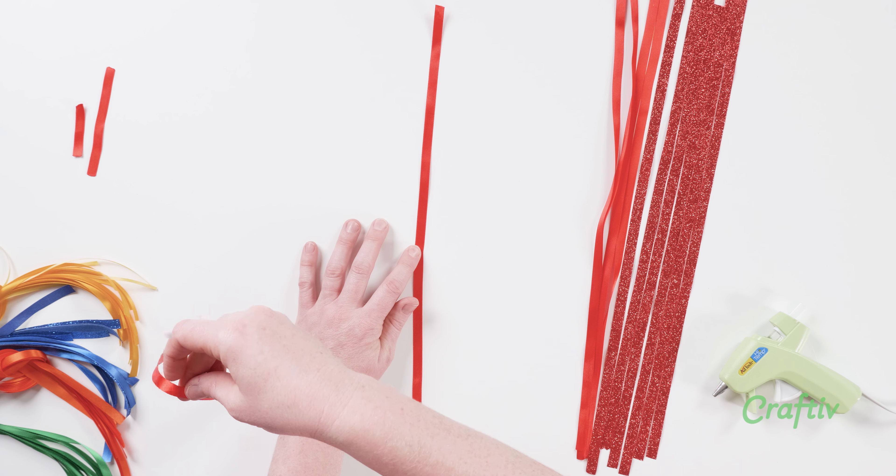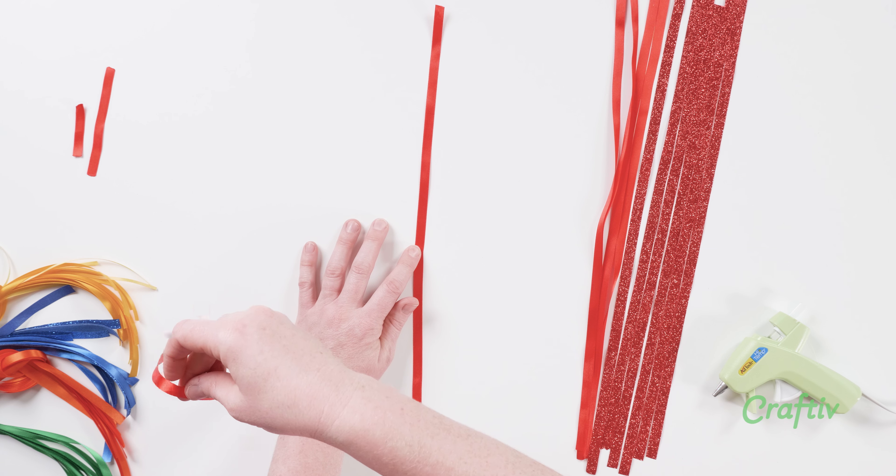So with the middle found, we're going to lay the ribbon down and place a dot of glue in the center. Then find the middle of our next ribbon and place it on top. Now keep in mind that if your ribbon has a right and a wrong side, place the right side facing down.